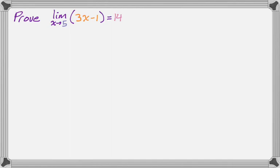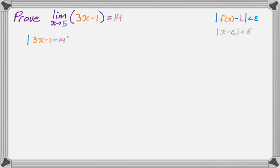Anytime I do these proofs, I first write down the two absolute value inequalities we're going to deal with. The first one: absolute value of f of x minus L is less than epsilon. The other one: 0 is less than the absolute value of x minus c is less than delta. Substituting in, f of x is 3x minus 1 and L is 14, and the delta inequality becomes the absolute value of x minus 5 is less than delta. My goal is to make the epsilon inequality look like the delta inequality.